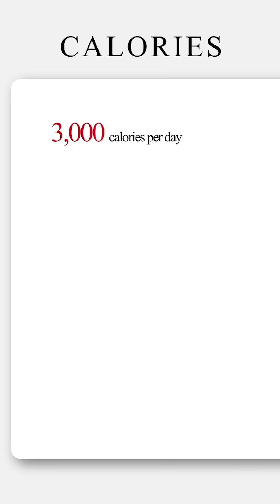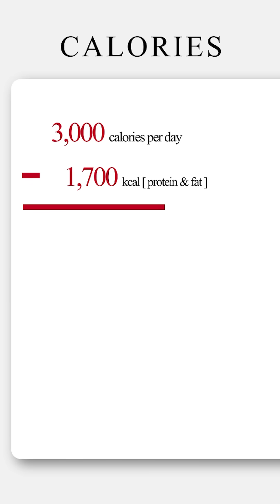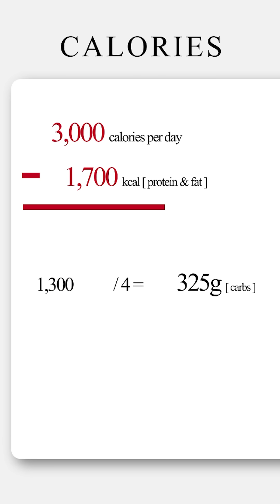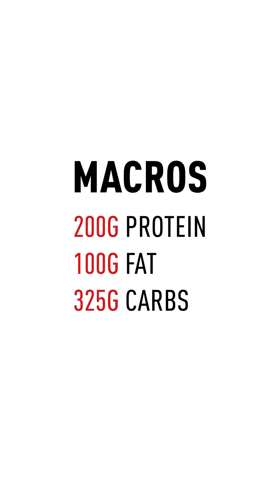We're going to then subtract out the protein and fat, which we already know — 1700 calories — leaving us 1300 calories to come from carbs. Now, we also know that there's four calories per gram of carb. So that means our 200 pound athlete is getting at least 300 grams of carbs per day, or 1.5 grams per pound of body weight.